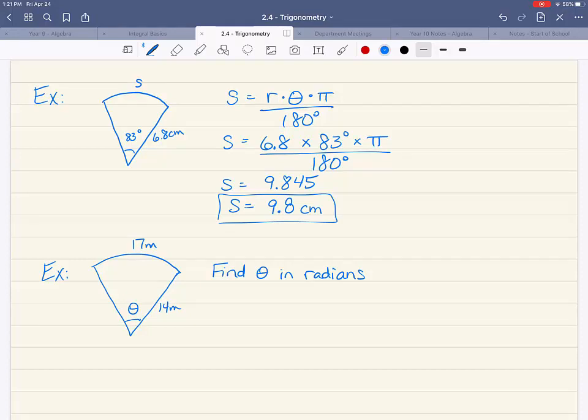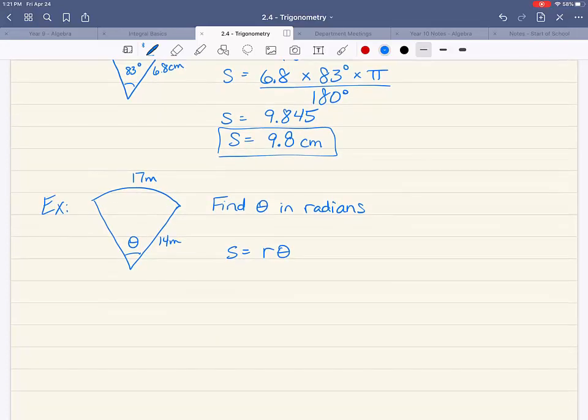Since it says in radians, we're going to use the radian formula, r times theta. S is 17, r is 14, theta is what we're solving for. Think about how do you get the theta by itself.